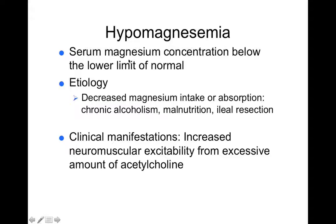Hypomagnesemia means low serum magnesium, from decreased magnesium intake — seen in chronic alcoholism, malnutrition, or ileal resection. This causes increased neuromuscular excitability from too much acetylcholine, because magnesium helps stabilize acetylcholine release. If you get too much acetylcholine being released, it causes hyperexcitability of skeletal muscle.